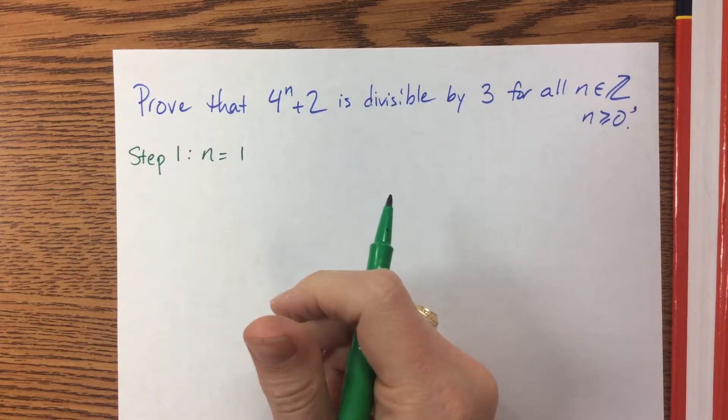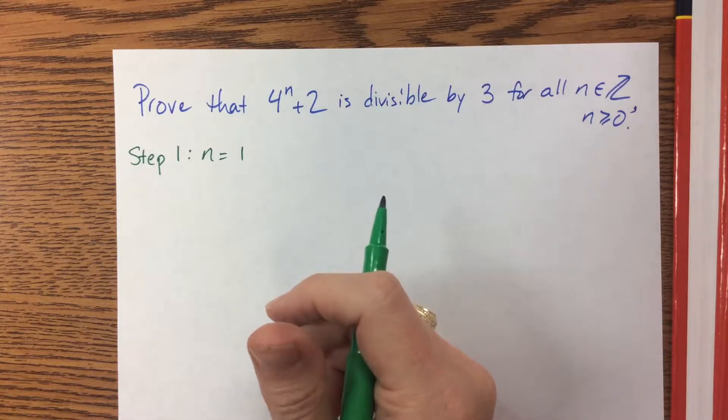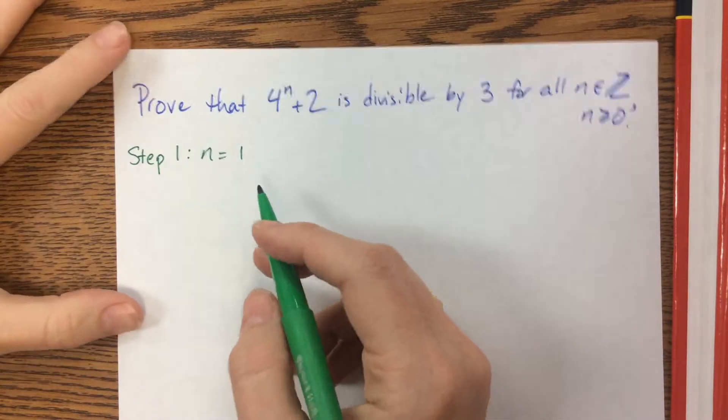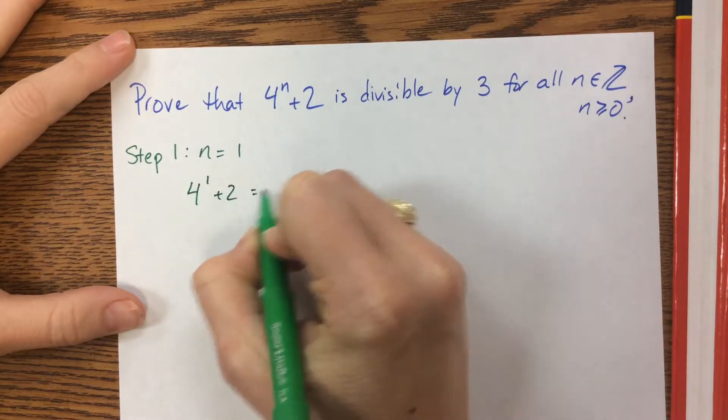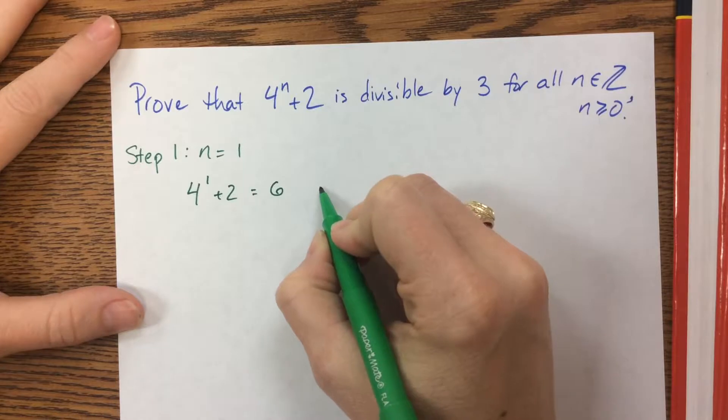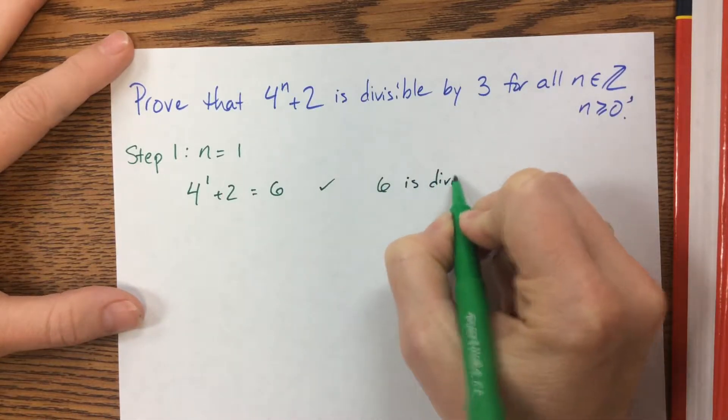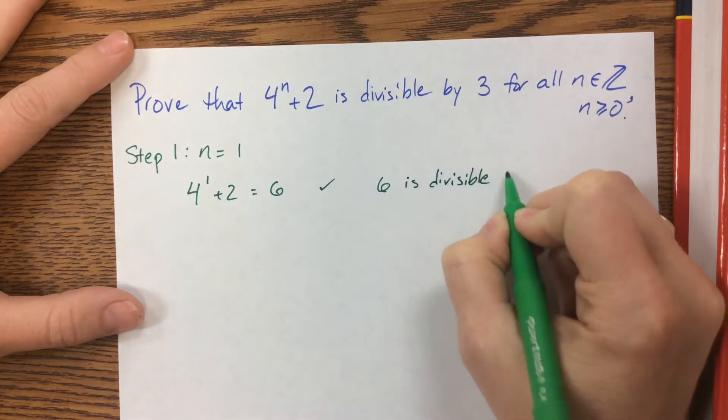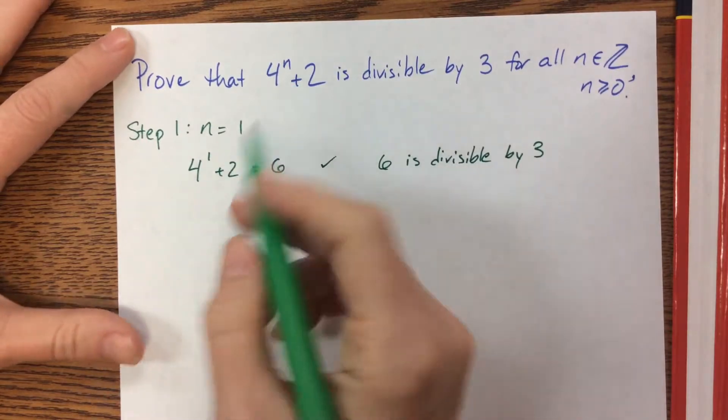In our ladder example, if you can't get your foot on the ladder you can't climb the ladder. So if you can't even make through the first step the whole thing doesn't work. In this case I have 4 to the 1 plus 2, well that's equal to 6, and we could say 6 is divisible by 3. We have shown step one.